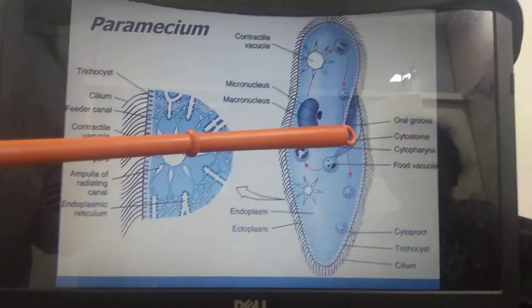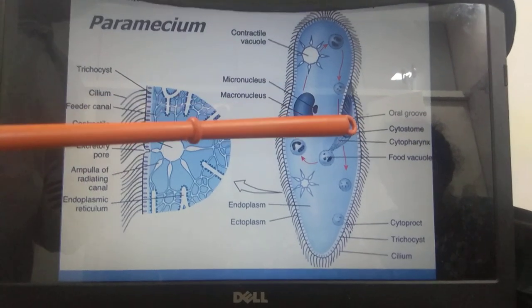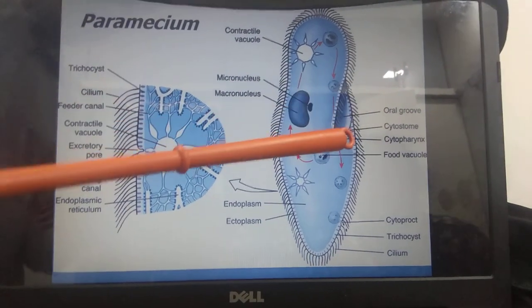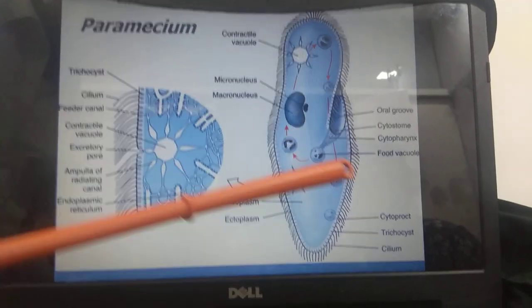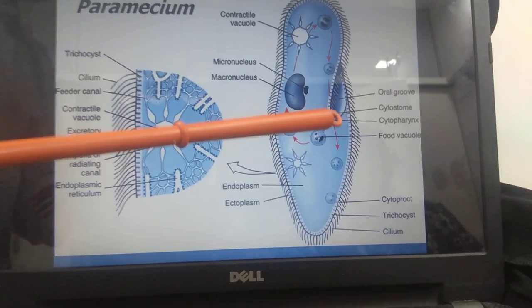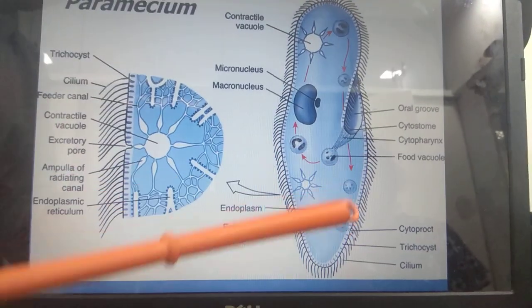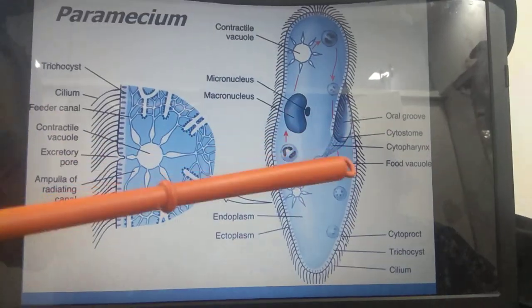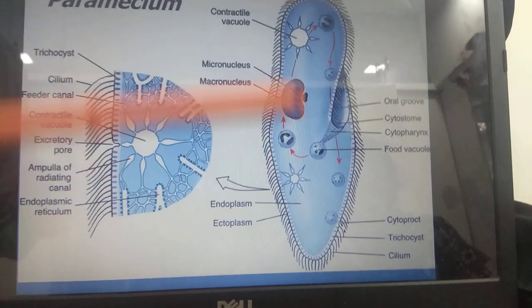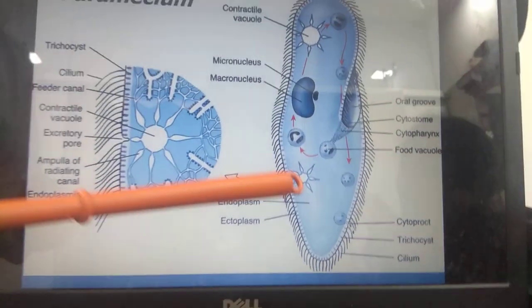On the lower surface, it shows the feeding apparatus that consists of the oral groove, the cytostome, and the cytopharynx. From the cytopharynx, the food vacuole is formed. This food vacuole circulates in a cyclic manner, which is called cyclosis.